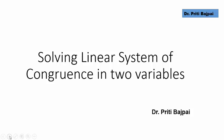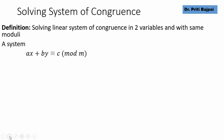Before we begin, let's understand what is such a system. Here let's say we are given two congruences: ax plus by is congruent to c mod m and a dash x plus b dash y is congruent to c dash mod m.